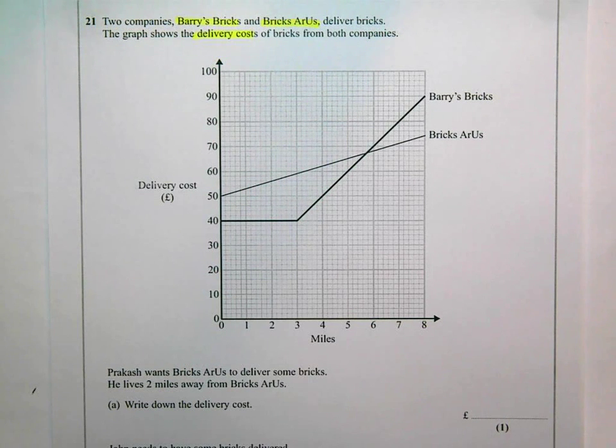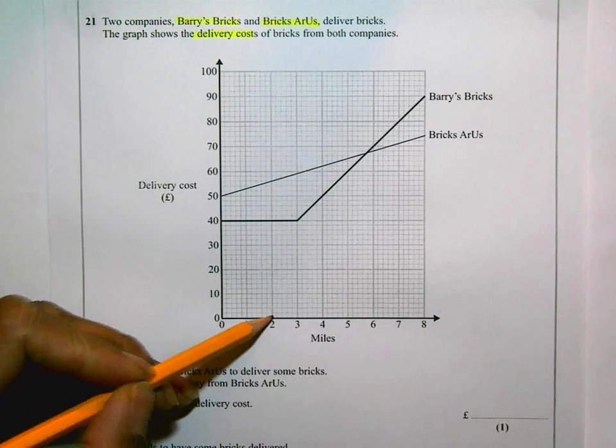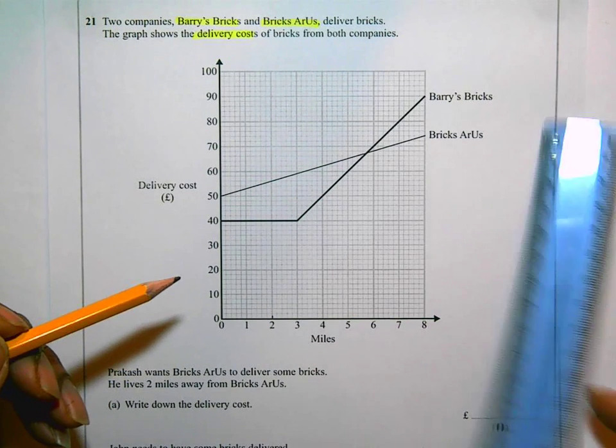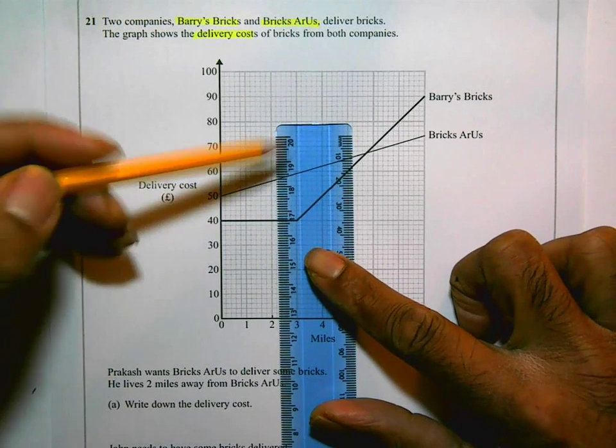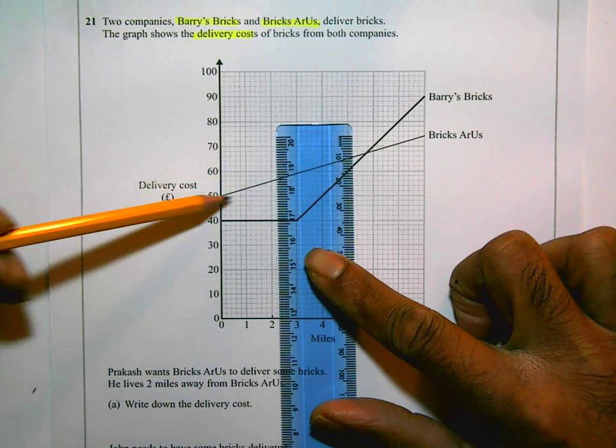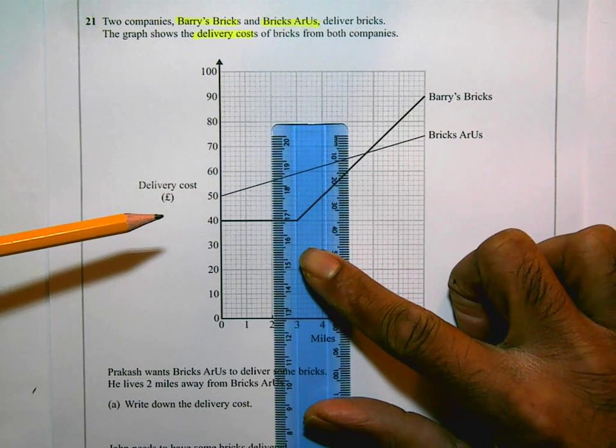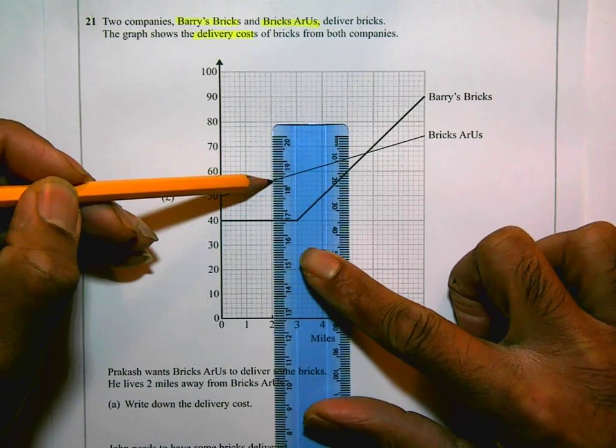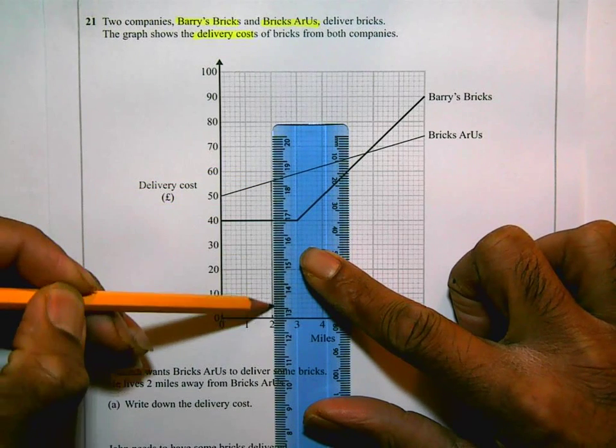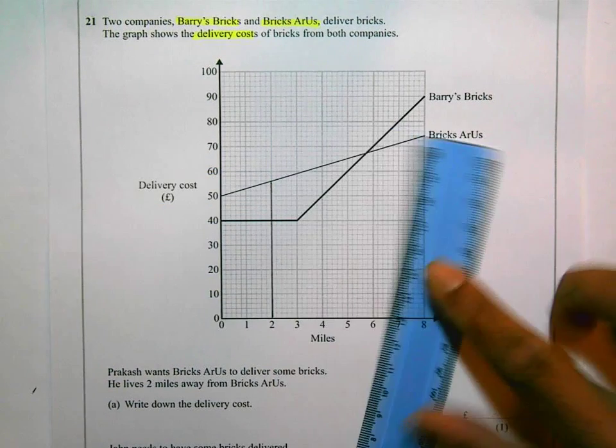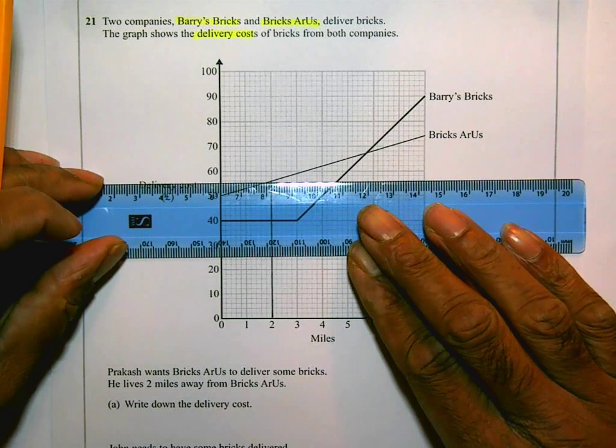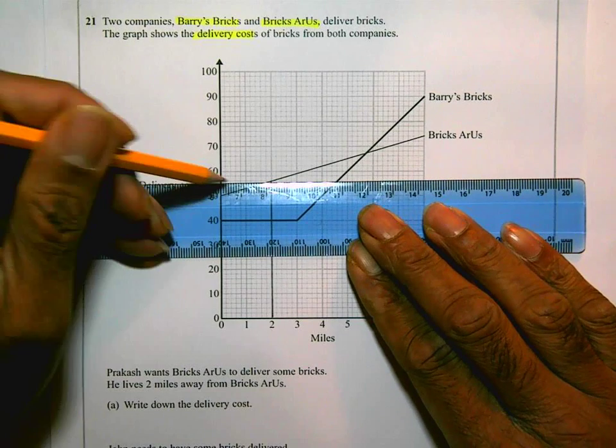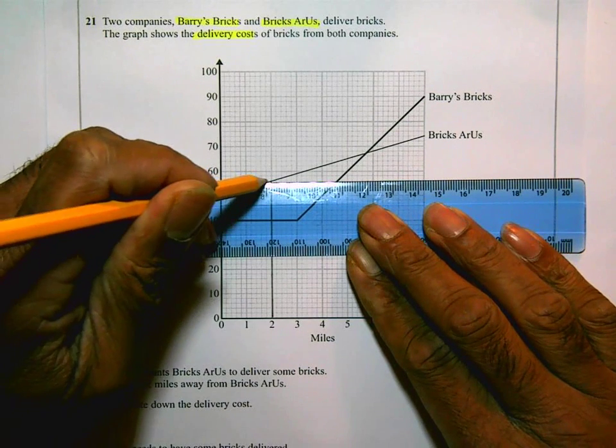So if he lives two miles away from Bricks Are Us, if I go to two miles there, I'm going to use my ruler and a pencil to draw a line. Bricks Are Us is this thinner line, this sloping line here. So I'm going to draw a line straight up to that. It doesn't need to be dark, but I just need to make sure I indicate it there. And then I'm going to put a horizontal line going across from where it meets that line.